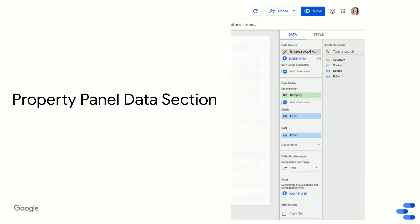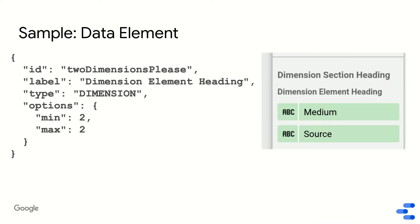Let's start with the data section. When you define the data part of your configuration, it defines what shows up in the data half of the property panel in Data Studio. A data element defines each individual section where you can load data into your visualization. It has an ID, a label that's rendered to the end user, a type, and options — and different types have different options.